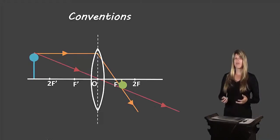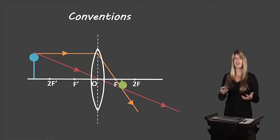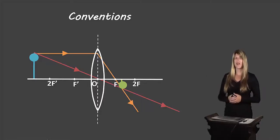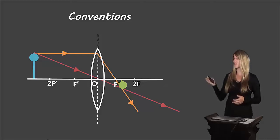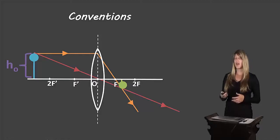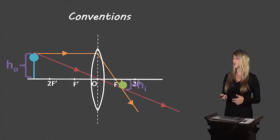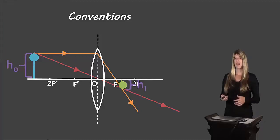Let's start off with the conventions — how we describe the different distances, heights, and so on with our lenses. We have here a ray diagram with a converging lens. You can see the original object in blue and the image in green. The height of the original object is HO, height of the object. The height of the image is HI — H for height, I for image.